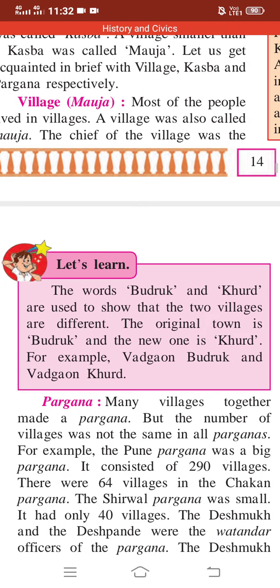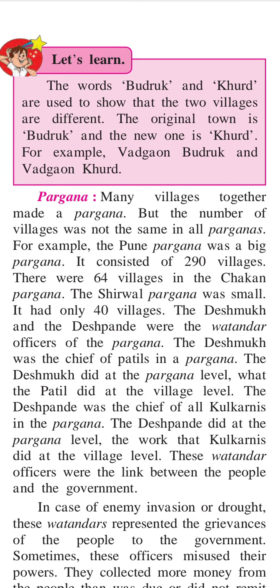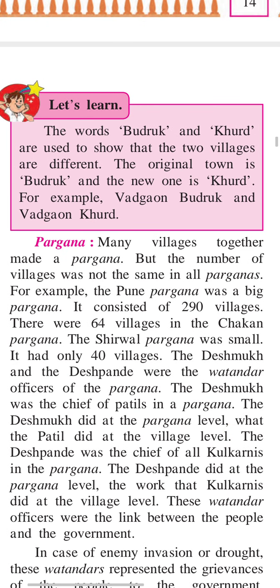Now discussing the Paragana. A Paragana was formed of many villages, but the number of villages was not the same in all Paraganas. For example, Puna Paragana was a big Paragana consisting of 290 villages, while other Paraganas had only 64 villages. So the number of villages forming a Paragana differed.